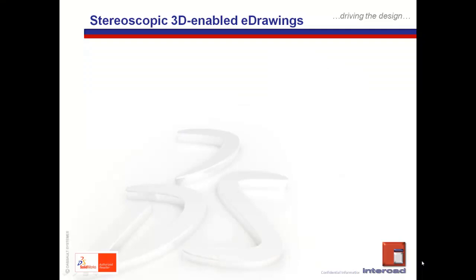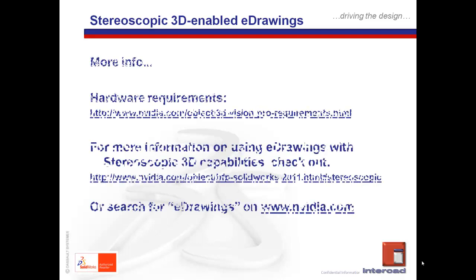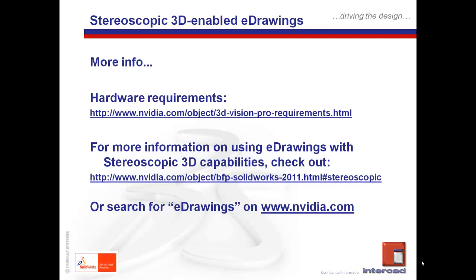Now, if this short presentation has fired up your imagination and gotten you excited about working with stereoscopic 3D graphics on your e-drawings, please hold on and finish off this presentation before you run away. For starters, you may wish to note that not all graphics cards support this functionality. Specific graphics card information can be obtained from the hardware requirements links shown on screen. In addition, there might be additional hardware — for example, stereoscopic 3D ready goggles or spectacles — required to fully experience the stereoscopic 3D capabilities of e-drawings. For more general information, please do a search of e-drawings on www.nvidia.com.